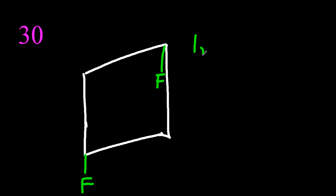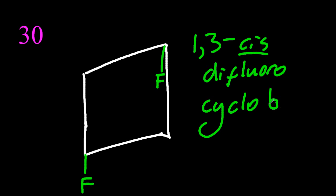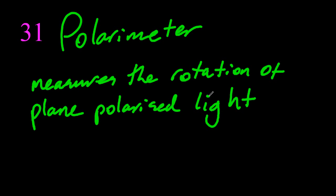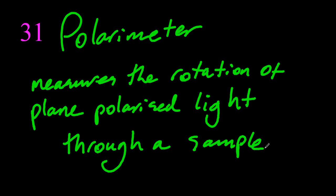For a bit of organic, so that's 1,3-cis-difluorocyclobutane. It is cis, even if they're not next to each other in the carbon chain. And the polarimeter finally measures the rotation of plane-polarised, because there's more than one sort of polarisation, plane-polarised light through a sample.